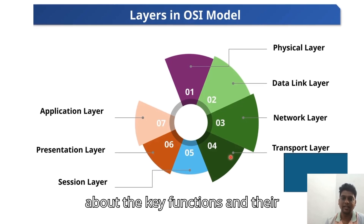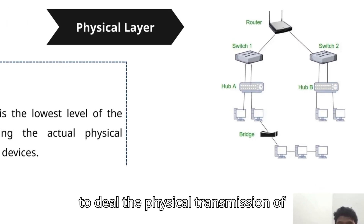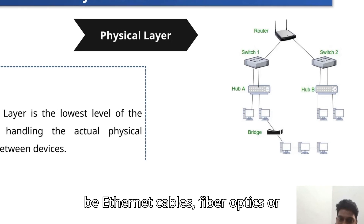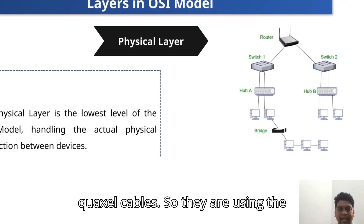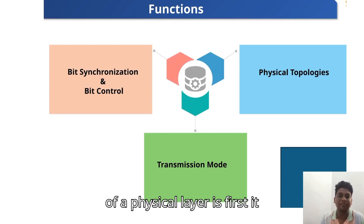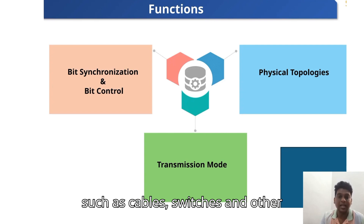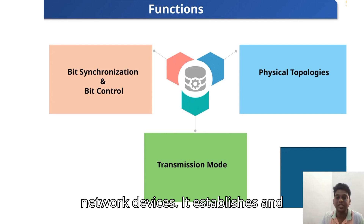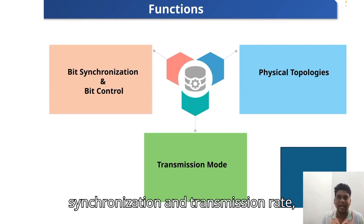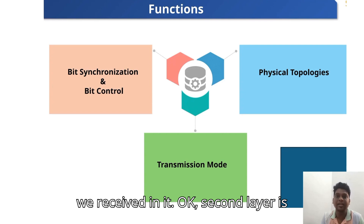Now let's discuss the key functions of each layer. The Physical layer's main purpose is to deal with the physical transmission of raw bits over a communication medium, such as Ethernet cables, fiber optics, or coaxial cables, using standards like USB, Bluetooth, and IEEE 802.3. Key functions include defining hardware specifications such as cables and switches, establishing and terminating physical connections, and managing bit synchronization and transmission rate (throughput).